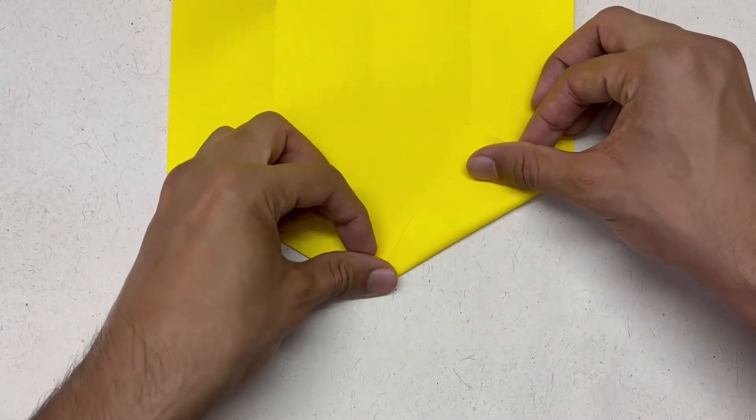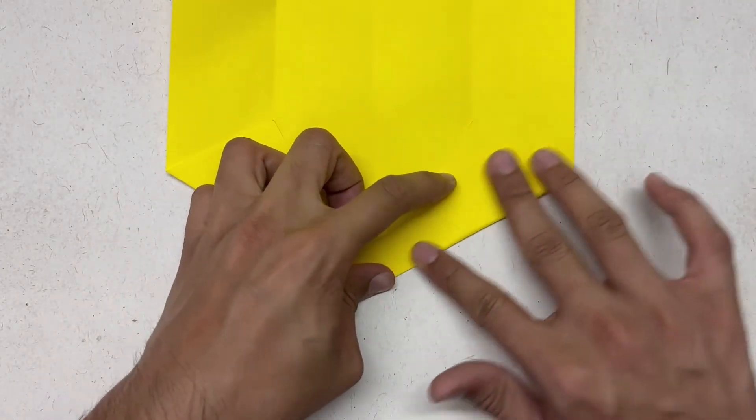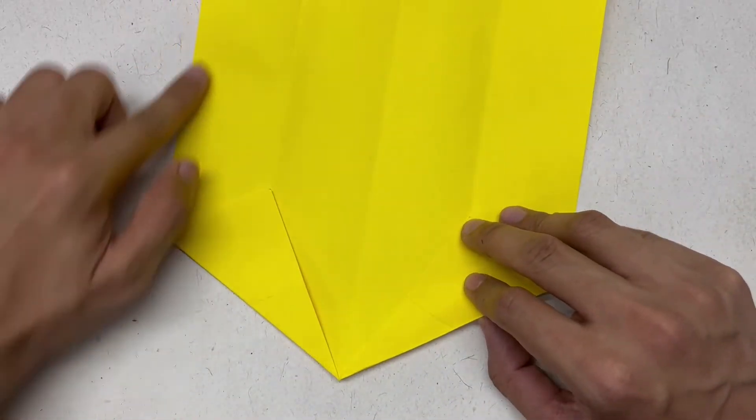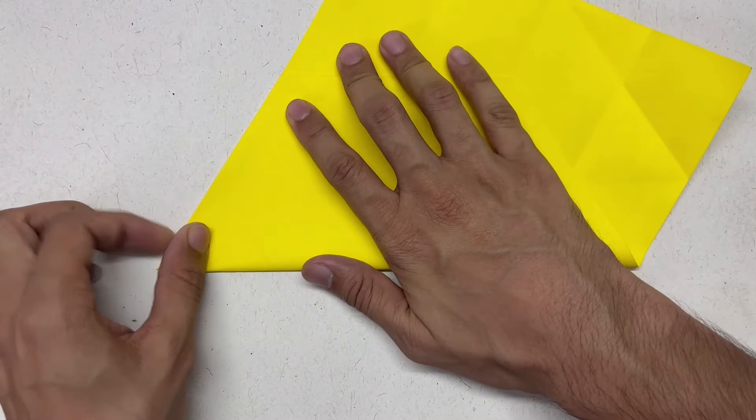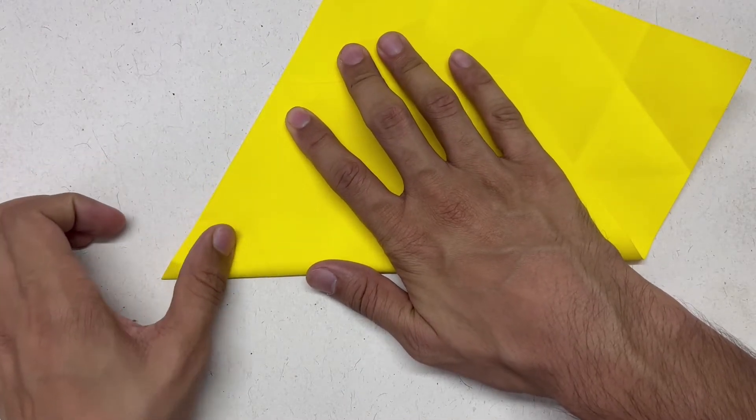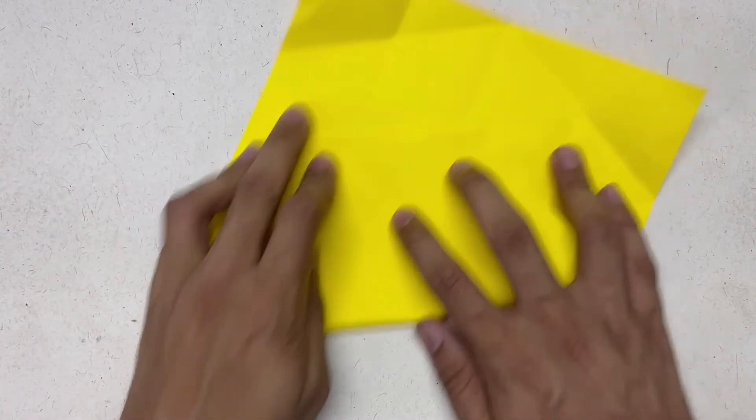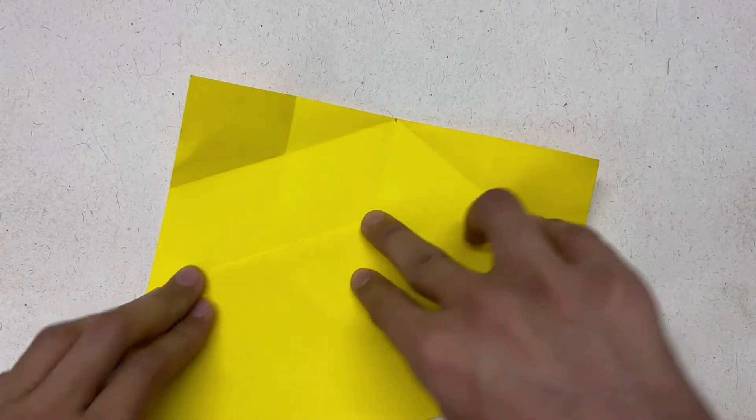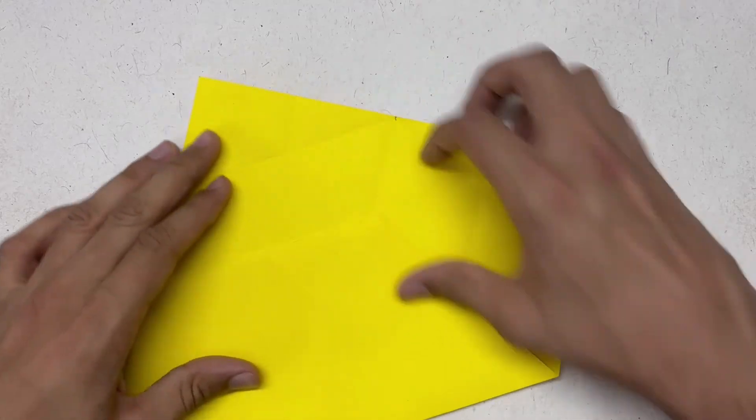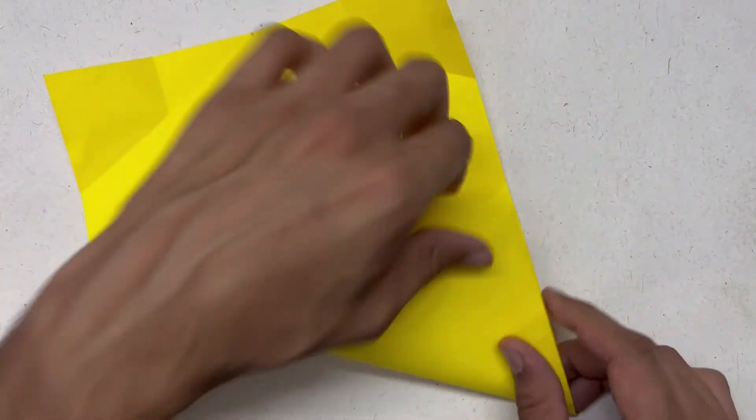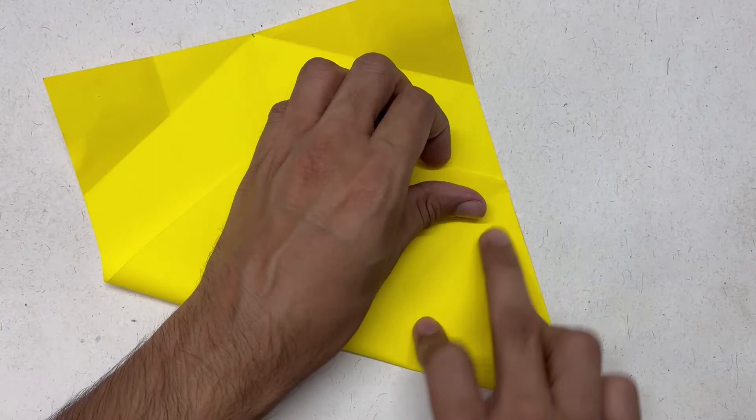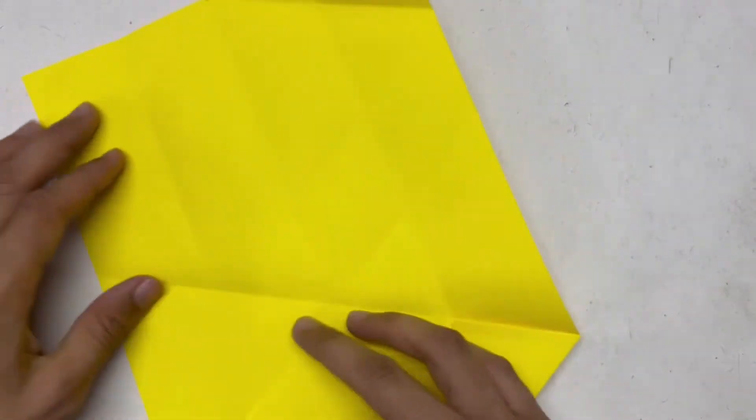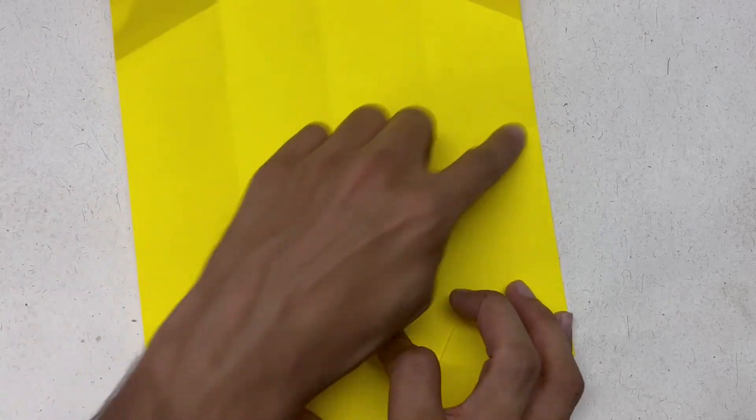Now touch this line with this line. To make sure that you fold it correctly, make sure that this vertex aligns with the central line. These are two checkpoints. Repeat the same over here.